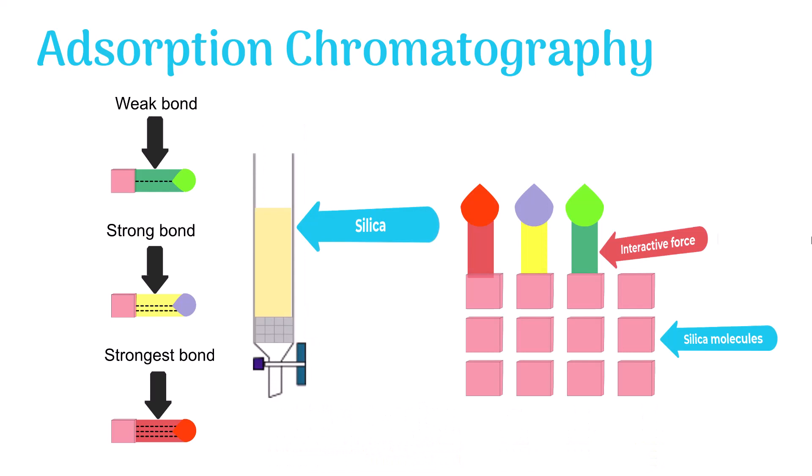In summary, adsorption chromatography is based on attraction between adsorbent and sample molecules. The sample molecules attract differently with the adsorbent molecules. The sample molecules then migrate with the adsorbent, but those which interact less with the adsorbent leave first.